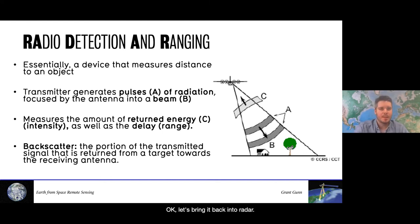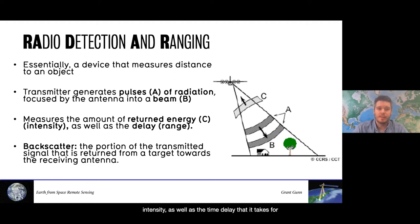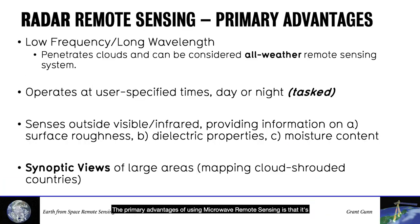Let's bring it back to radar. What does radar mean? It's Radio or Microwave Detection and Ranging — essentially a device that measures distance to an object. A transmitter generates a pulse of radiation focused by an antenna into a beam, and then we measure the amount of returned energy, which is the intensity, as well as the time delay it takes for that beam to return to the sensor. The value we're looking to obtain is the backscatter, which is the portion of the transmitted signal returned from a target towards the receiving antenna.